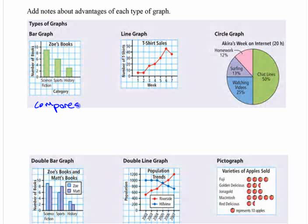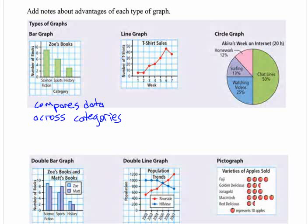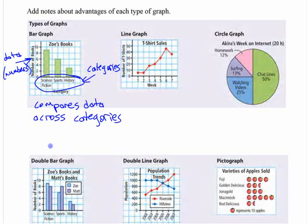Compares data across categories — one set of data across categories. When I say data, I mean numbers. You can look at different numbers across some categories. The idea is that you write this down. That's why I gave you this handout — it's made so that you can add notes to it. It helps you from having to write out the whole thing yourself. When we're talking about something together, it's important that you write down what you need to be writing down. Find something to write with and put those notes down.